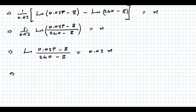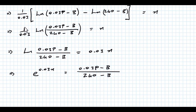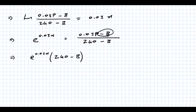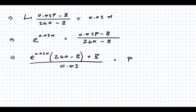Converting to index form: e to the power of 0.03n = (0.03P minus B) over (240 minus B). To isolate P, multiply across by (240 minus B), add B, and divide by 0.03. This gives us P in terms of n and B — the solution to the differential equation showing the population after n years.